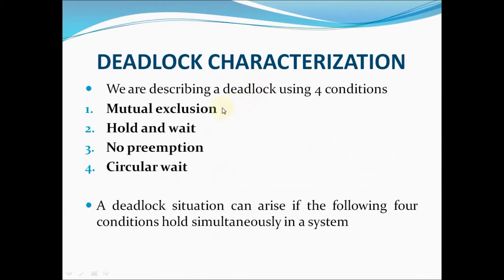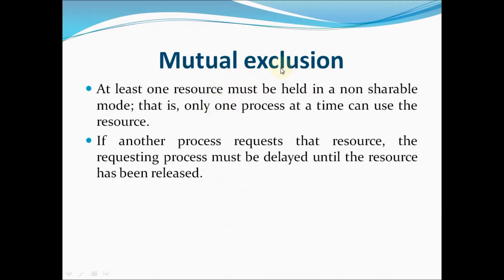The first condition is mutual exclusion. Mutual exclusion means only one process should use the resource at a time. If another process requests a resource that is held by an existing process, you can't give that resource to the new process until the existing process releases it. The new process must wait until the existing process releases the resource — so at a time, only one process can use the resource.